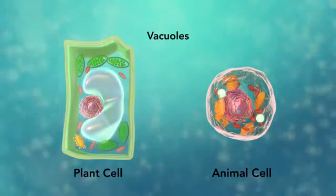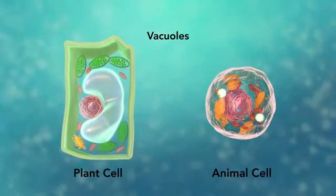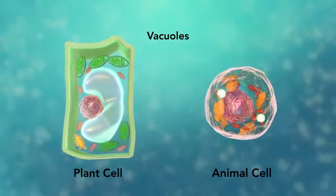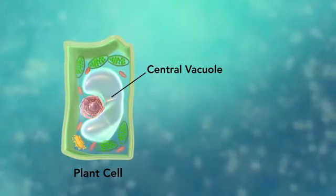Vacuoles are sac-like structures that store different materials. Here, in this plant cell, the central vacuole stores water.